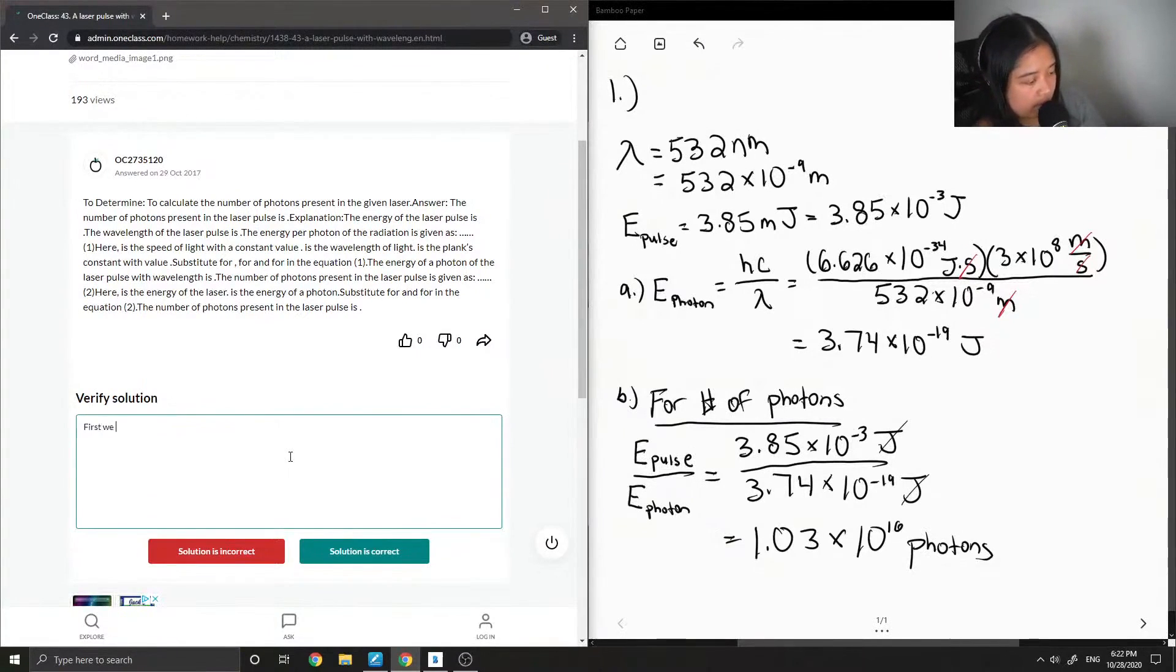First we need to calculate the energy of a photon using E equals hc over lambda, or wavelength.